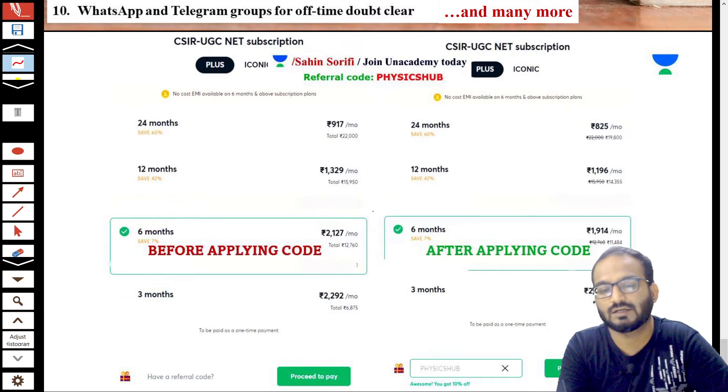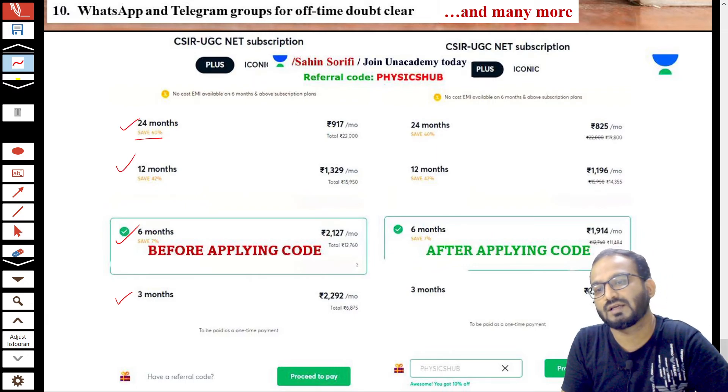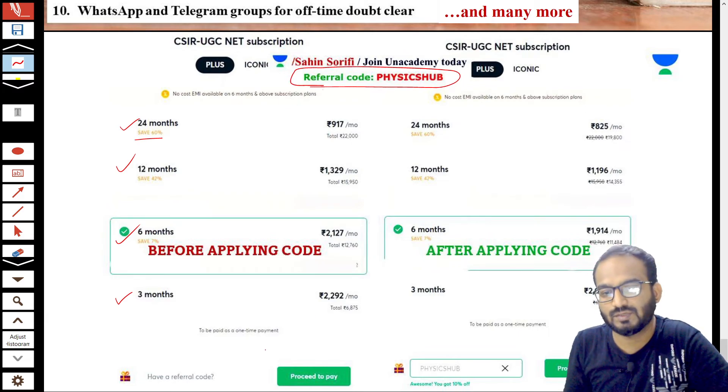This is the fee structure. You can go for 3 months, 6 months, 12 months, or 24 months subscription. If you utilize our referral code PHYSICSHUB, Unacademy will give you maximum benefits.